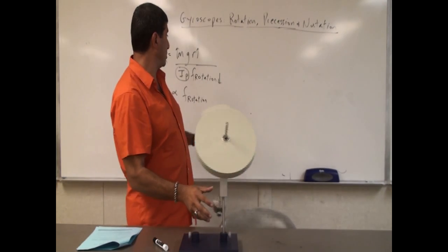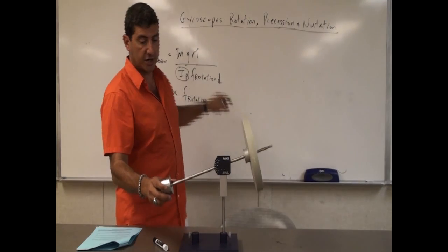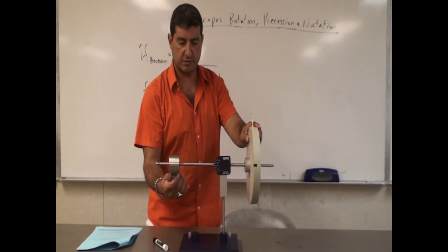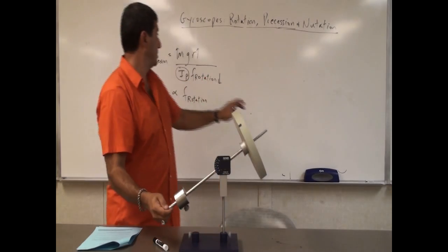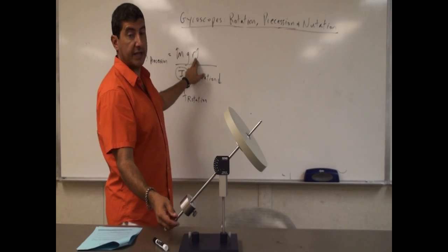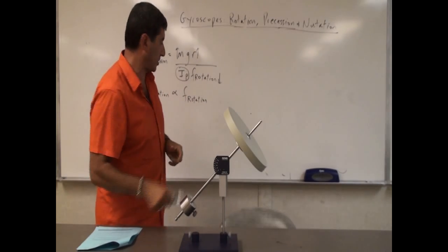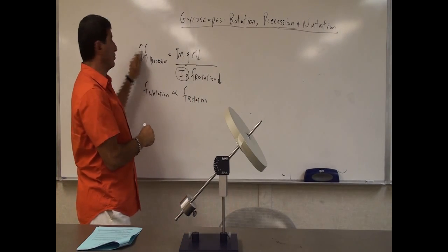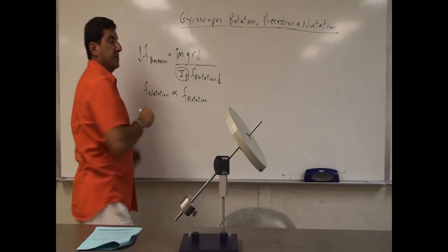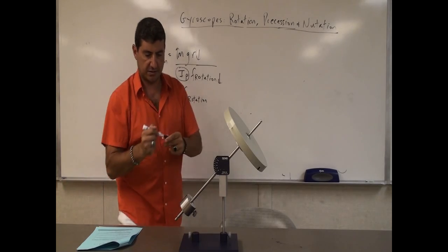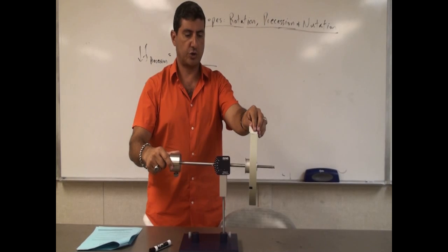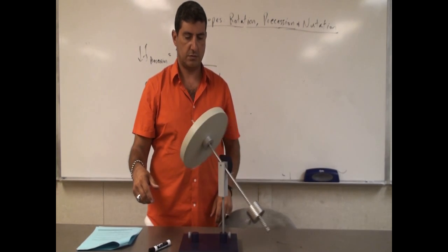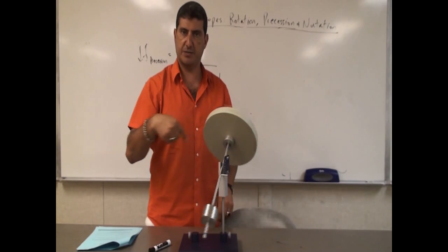The other thing I can change is the r — the distance. I can bring this weight in a little bit closer. So what should happen? If I decrease r, I'm decreasing the amount of torque. If I decrease the torque, the precessional frequency should go down — it shouldn't precess as fast. So I brought this in a little bit. Let's go slow. The precession is not as fast as before.